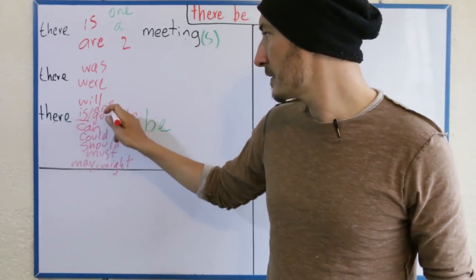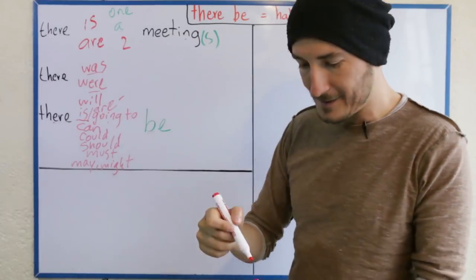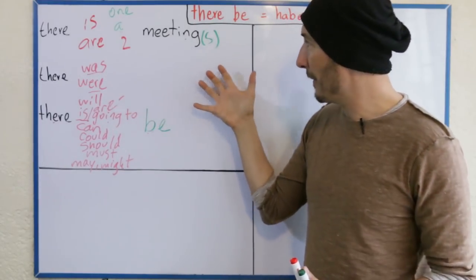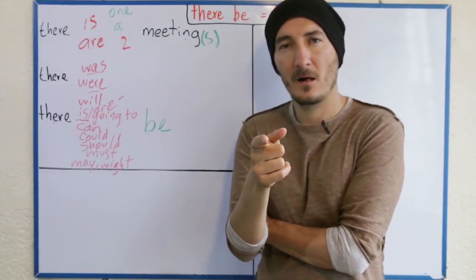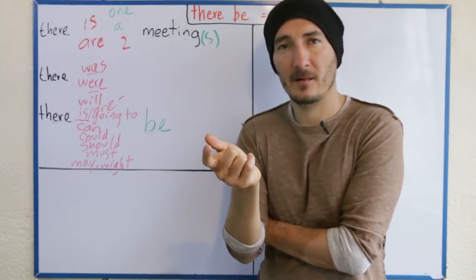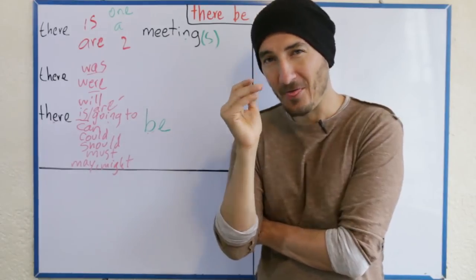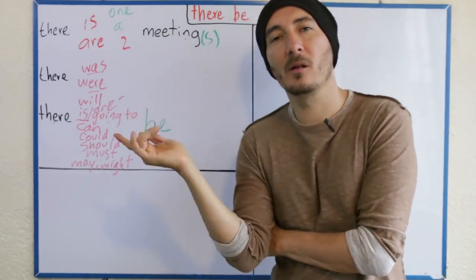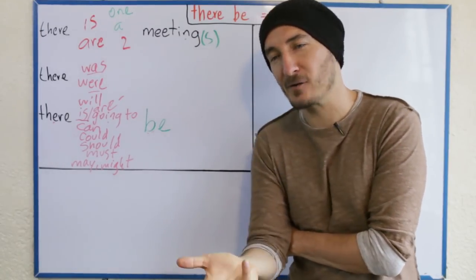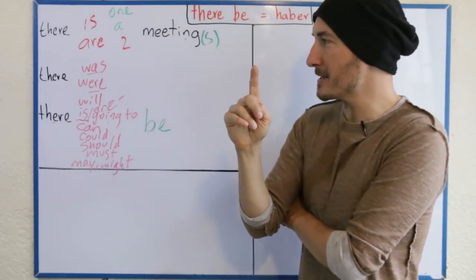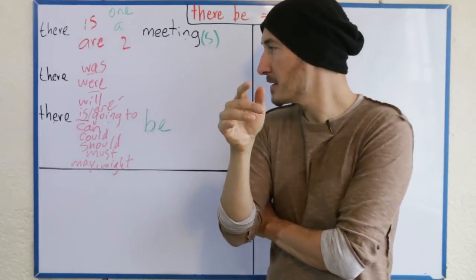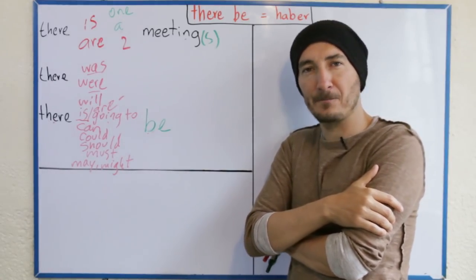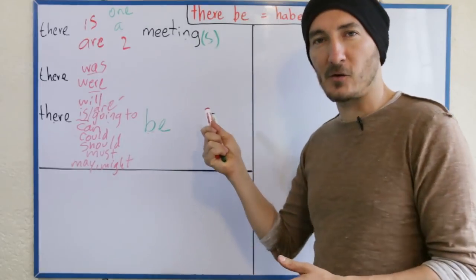Lo que tengo que fijarme es que lo que cambia es: desde que haya 'is', tiene que haber 'are'; desde que haya 'was', tiene que haber 'were'. La una para el singular y la otra para el plural. Estos serían los tiempos más básicos. Hay uno encima de la mesa — there is one on the table. Hay muchos encima de la mesa — there are many on the table. Había uno encima de la mesa — there was one on the table. Había muchos encima de la mesa — there were many on the table. Debería haber dos encima de la mesa — there should be two on the table.